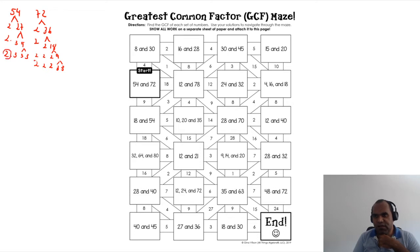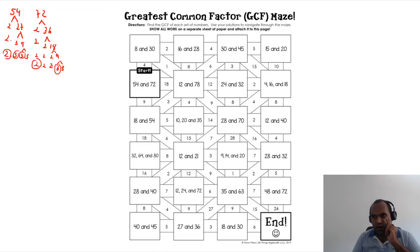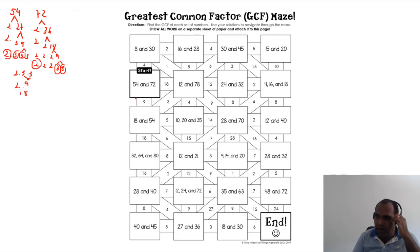Now look for the common prime factors. We have one two in 54 and one two in 72, and a three and another three. So the GCF is two times three times three. Three times three is nine, nine times two equals 18. The greatest common factor is 18.